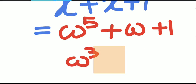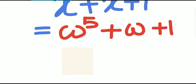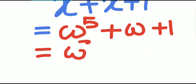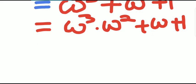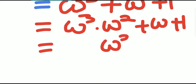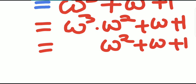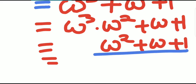Let us apply that idea. We know that ω cubed equals 1. So ω to the power 5 is simply equal to ω cubed into ω squared. Since ω cubed is simply equal to 1, this can be written as ω squared plus ω plus 1. And we know that 1 plus ω plus ω squared is simply equal to 0.